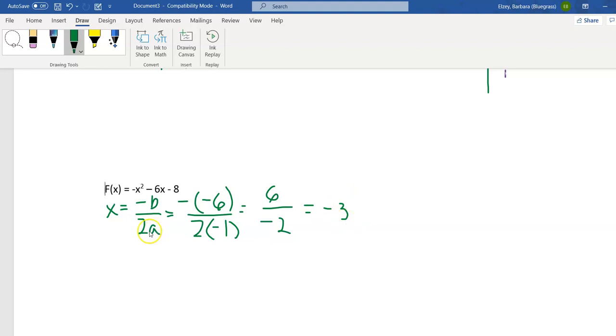Now don't forget, we have to plug this back in to get our y value. So f of negative 3 is negative, negative 3. Be careful that you leave that negative out in front of that x squared when you plug in. Negative 6 times negative 3 and minus 8. So when I square this negative 3 it's 9, but there's a minus sign in front of it so it's a negative 9. And then negative 6 times negative 3 is plus 18 minus 8. So negative 9 and 18 is 9, and 9 minus 8 is 1. So this vertex is at negative 3, 1.